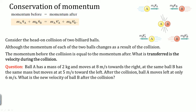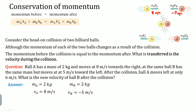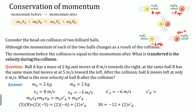What is the new velocity of ball B after the collision? Let's label everything out. The two masses are both 2 kilograms. The initial velocity of A was 8 m/s to the right. B goes to the left at 5 m/s, so that's negative. Then the new VA is negative 6 meters per second. Notice A lost a lot of its momentum, so B's momentum has to gain. Here's the conservation of momentum equation — plug it in and do the algebra. You get: 30 equals negative 12 plus 2 times V-prime-B.